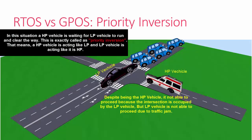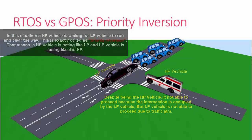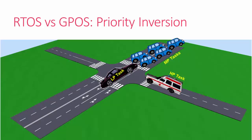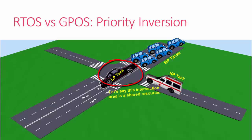Now let's apply this to the computing world. Your car is the lower priority task, these taxis are medium priority tasks, and this ambulance is the higher priority task. And this intersection area...